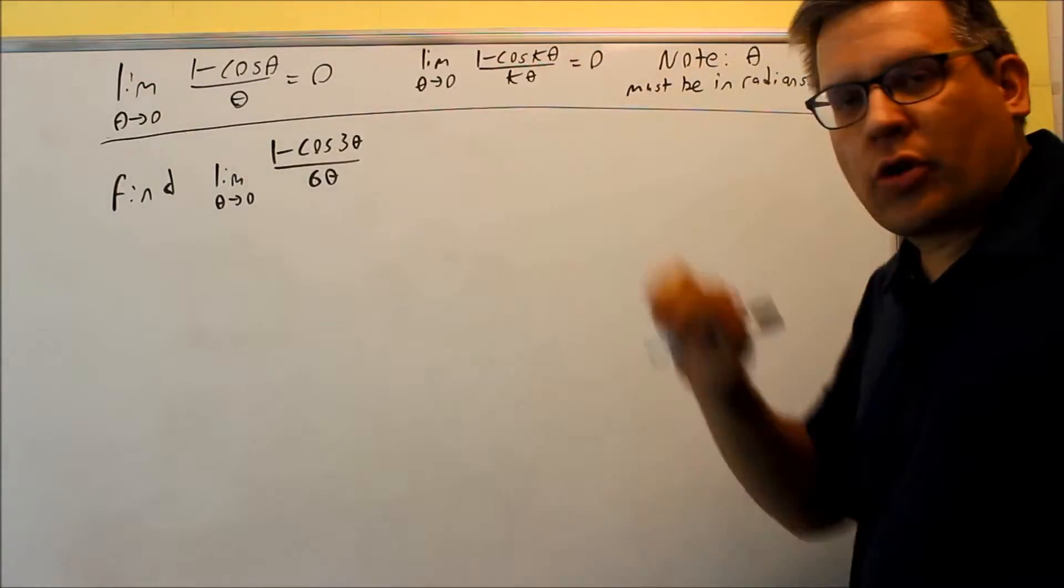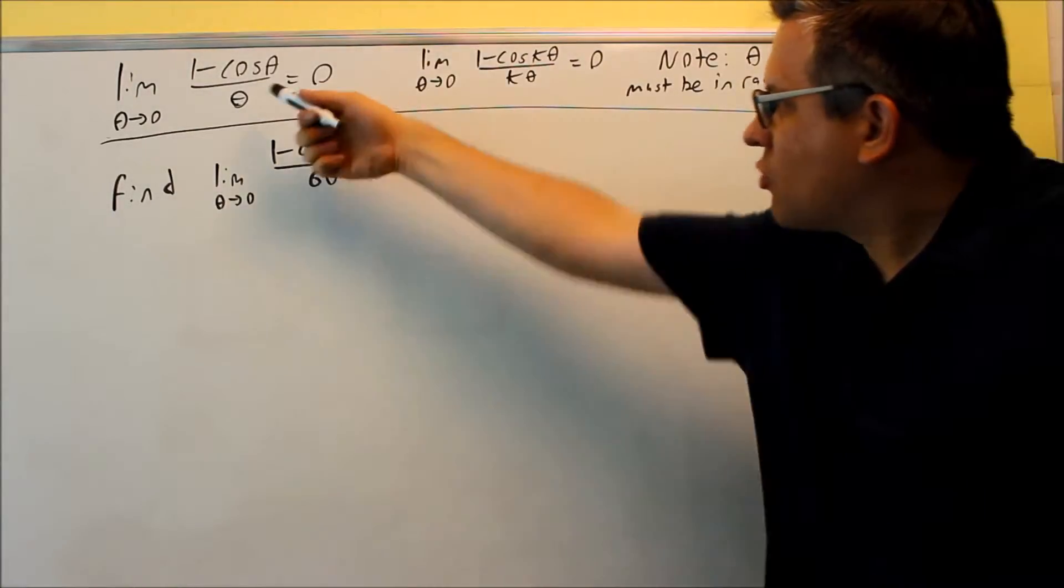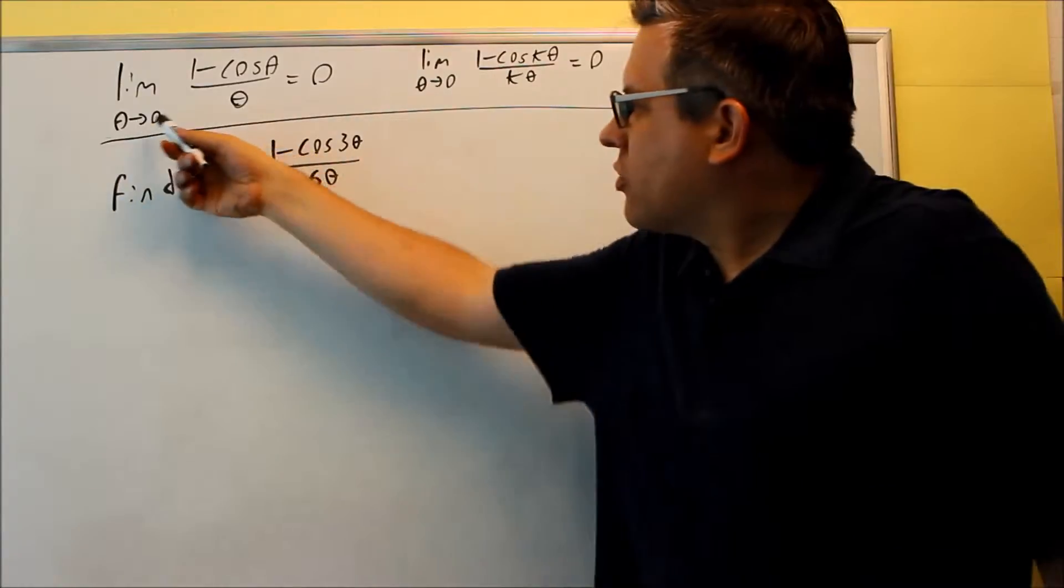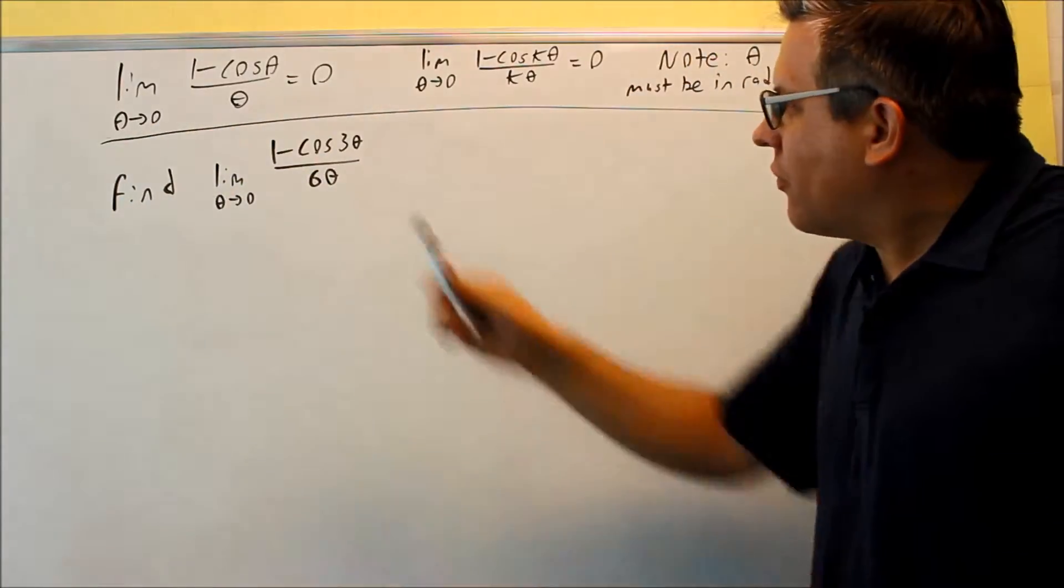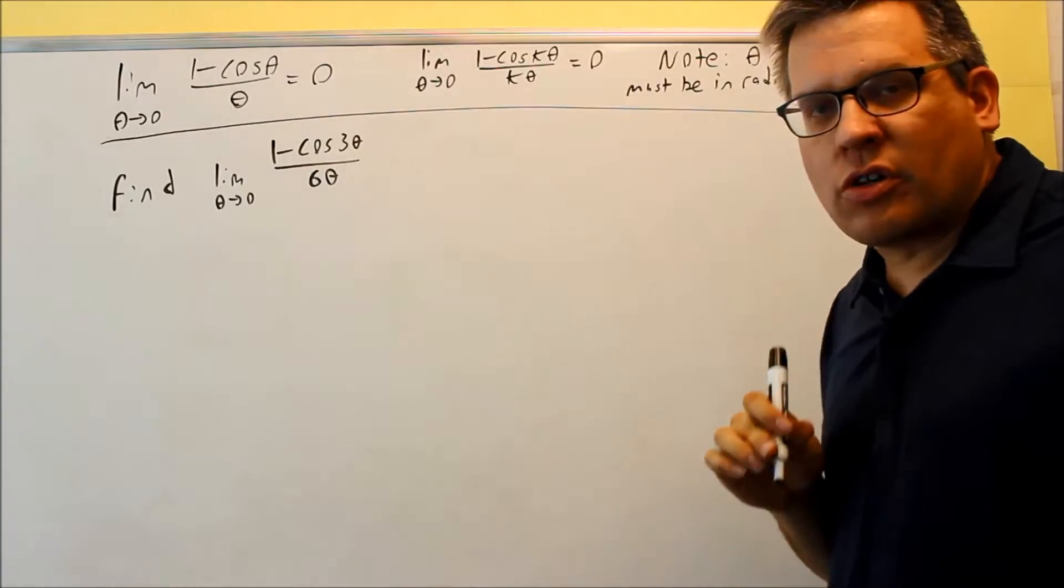Okay, the next special limit involving trig functions is this one here. Limit as theta goes to zero, one minus cosine of theta over theta, that's going to go to zero.